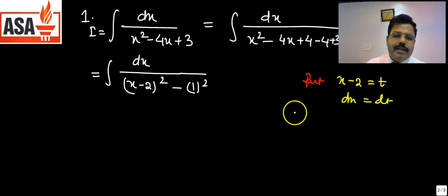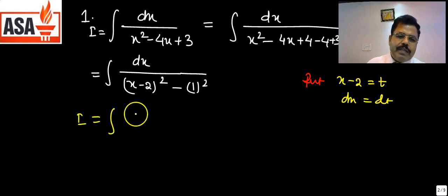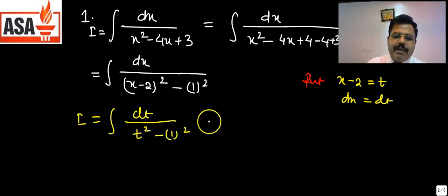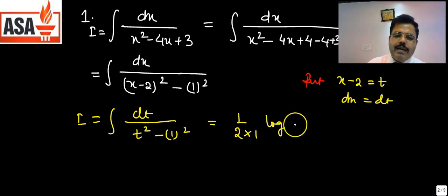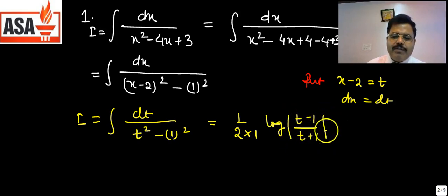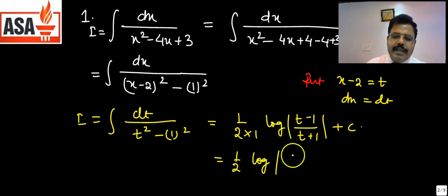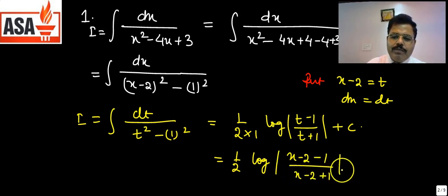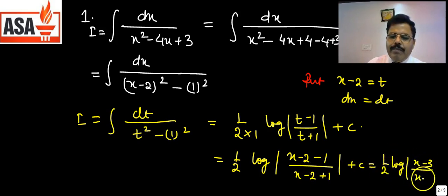Let t = x minus 2, so dx equals dt. The integral becomes dt upon t² minus 1². Using the formula for dx upon x² minus a², which is 1/(2a) log|(x−a)/(x+a)|, we get 1/2 log|(t−1)/(t+1)| plus c, which equals 1/2 log|(x−3)/(x−1)| plus c.